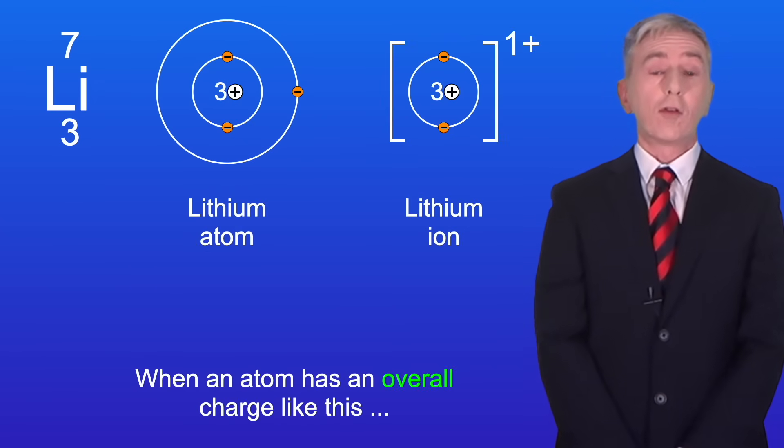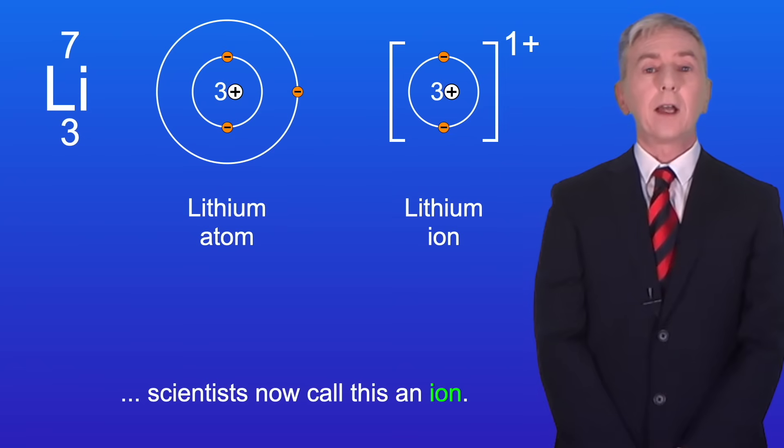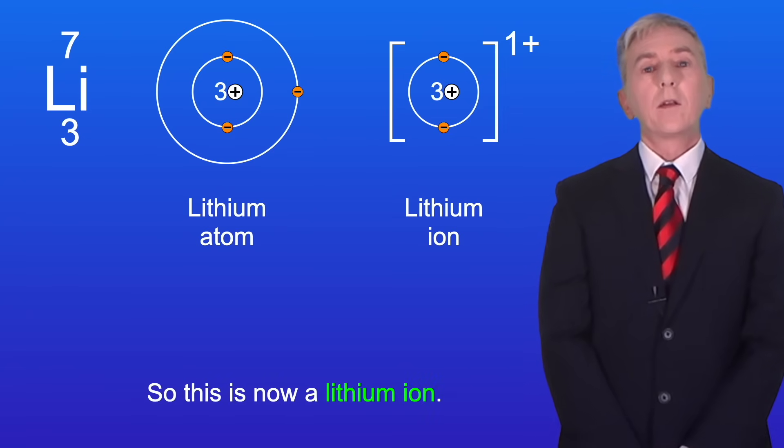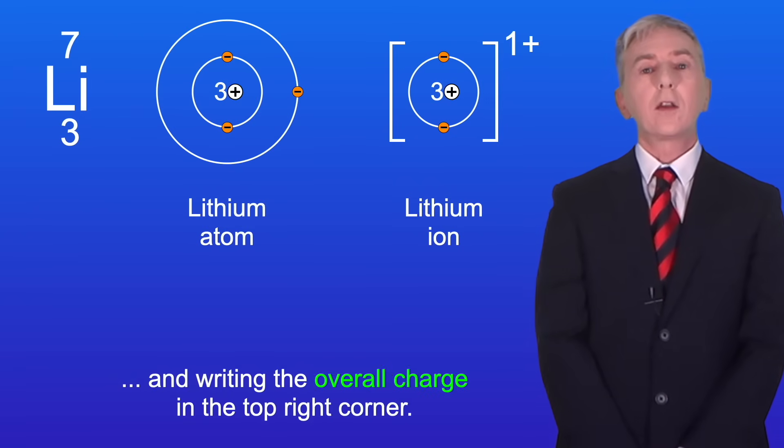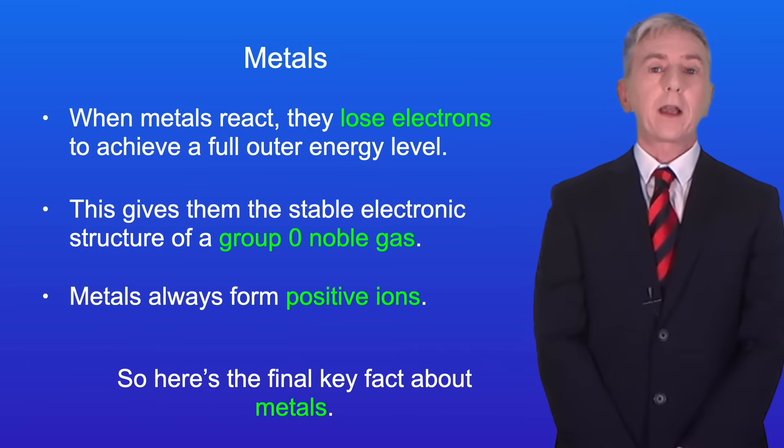When an atom has an overall charge like this, scientists now call this an ion. So this is now a lithium ion. We show this by drawing square brackets around the ion and writing the overall charge in the top right corner. So here's the final key fact about metals. Metals always form positive ions.